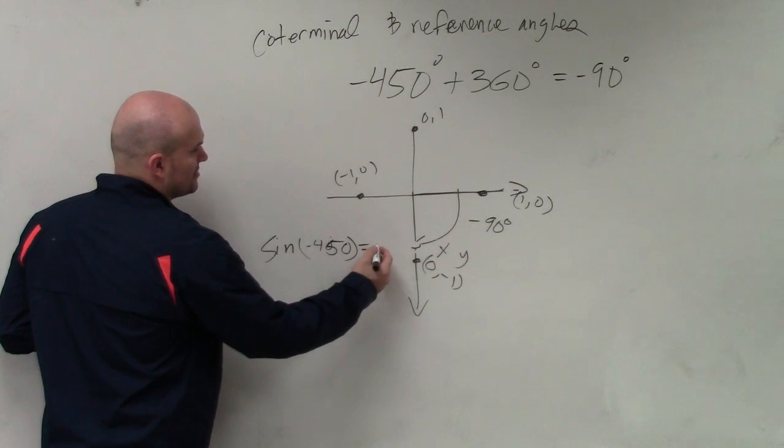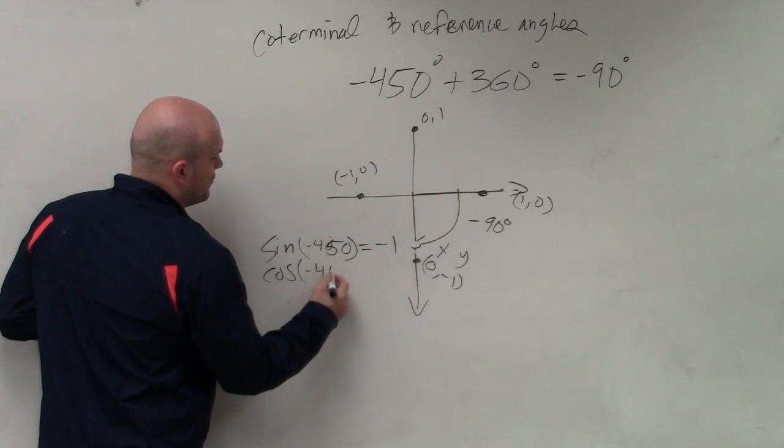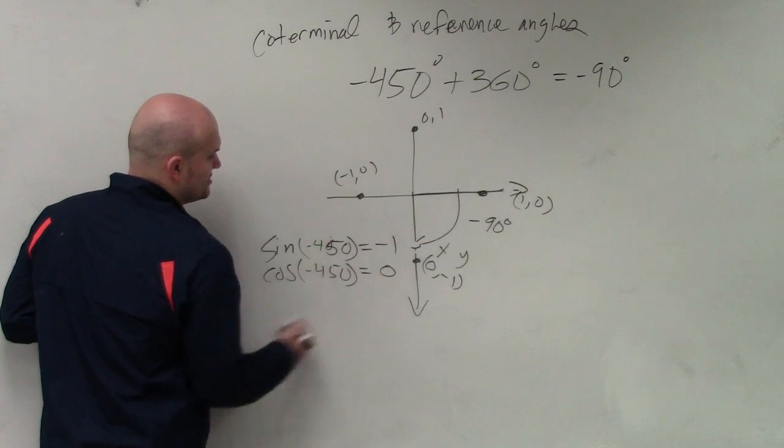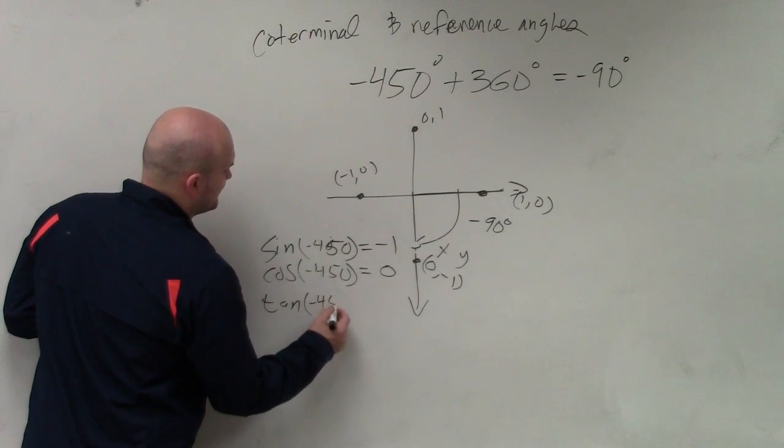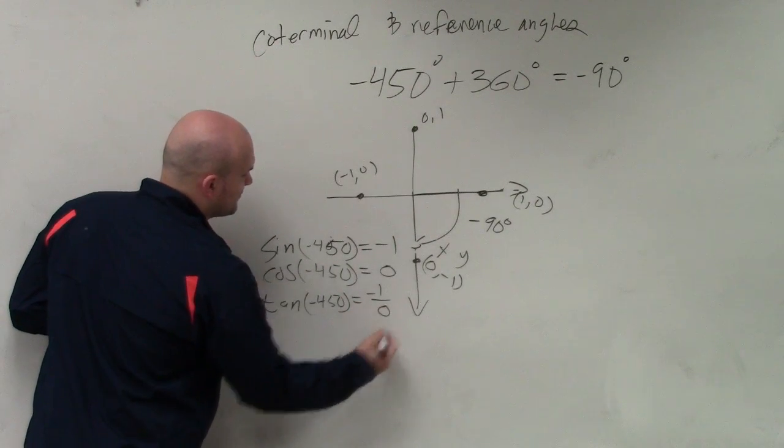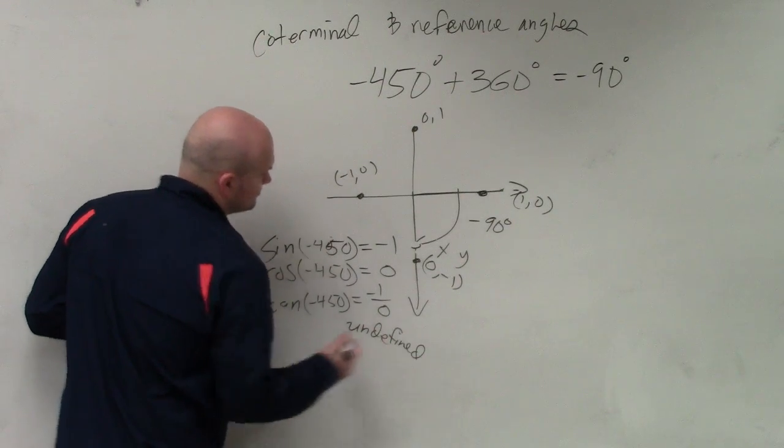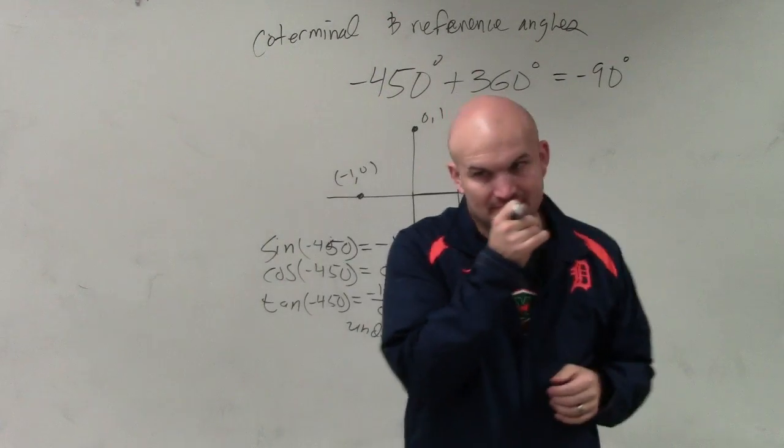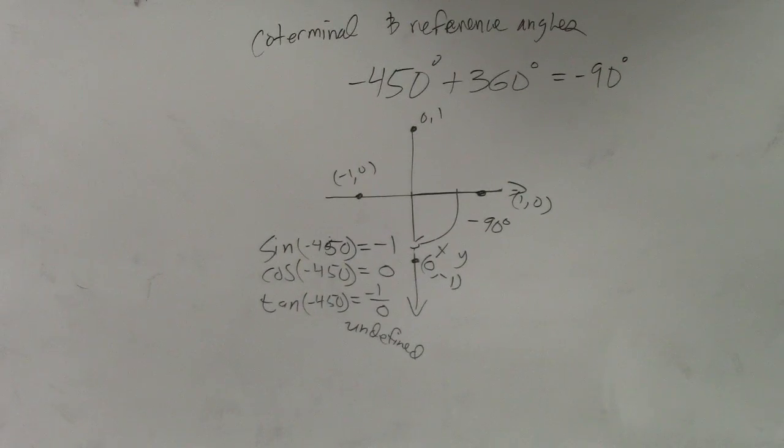which in this case is negative 1. The cosine of negative 450 is equal to the x-coordinate, which is 0. And the tangent of our negative 450 degrees is equal to y over x, which is negative 1 over 0, which is undefined. OK? So this, when you're doing this,